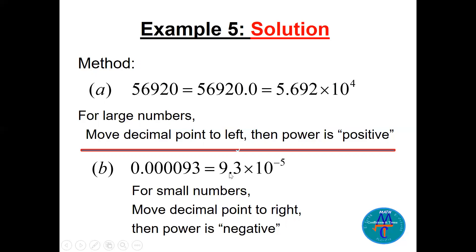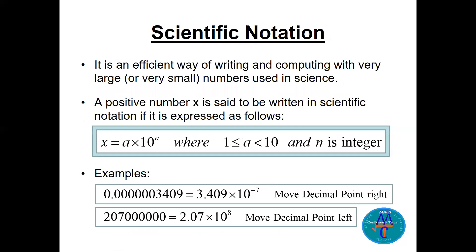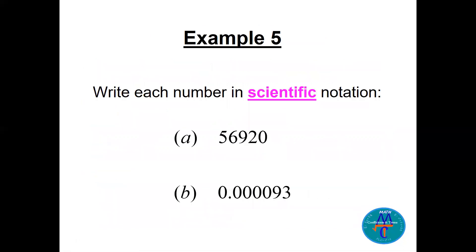I stop at nine because nine is less than 10. Please remember the rule: a must be between 1 (closed) and less than 10, so one-point-something up to less than 10.